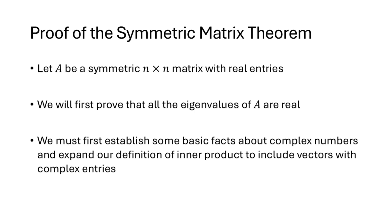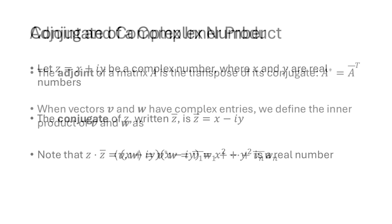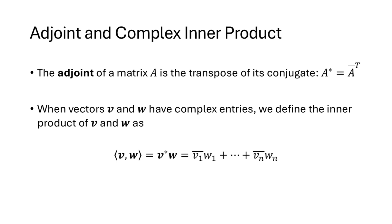Let A be a symmetric n by n matrix with real entries. The first thing we need to prove is that all of the eigenvalues of A are real numbers. We'll need to establish some facts about complex numbers and expand our definition of inner product to include vectors with complex entries. Let z = x + iy be a complex number, where x and y are real numbers. The conjugate of z, written z-bar, is z-bar = x − iy, reversing the sign of the imaginary part. Notice that z times z-bar equals x² + y², which is a real number. The adjoint of a matrix is the transpose of its conjugate, or equivalently the conjugate of its transpose. We write A* = A conjugate transpose.